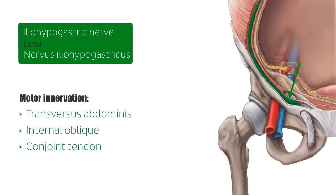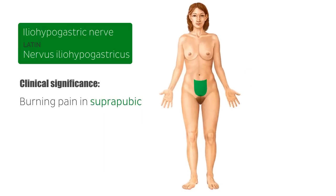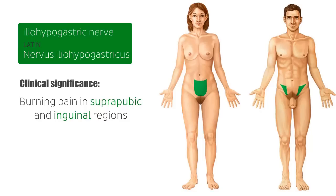Injury or trauma to the iliohypogastric nerve may result in burning pain in the suprapubic region and the inguinal region. These injuries can be treated through injection of a local anesthetic, an analgesic, or with physical therapy. An iliohypogastric nerve injury may arise from a pelvic injury, during a surgical procedure, a sports injury, and sometimes — though very rarely — in pregnancy.